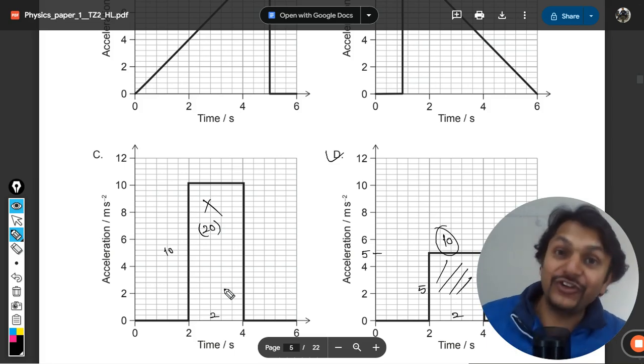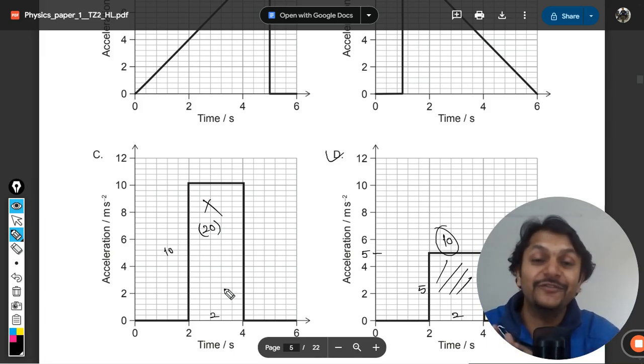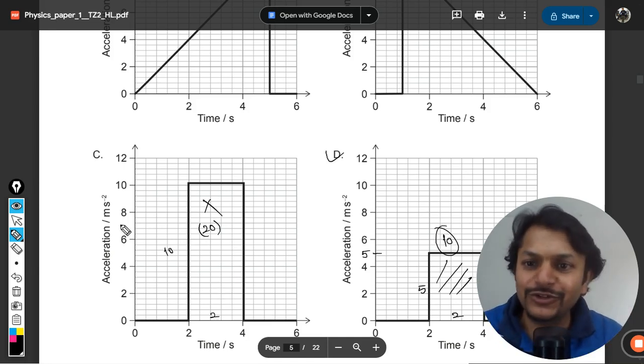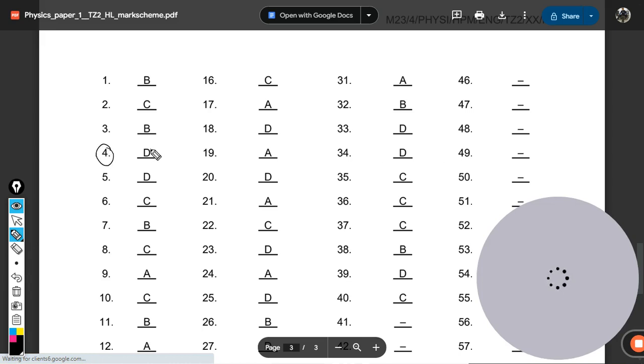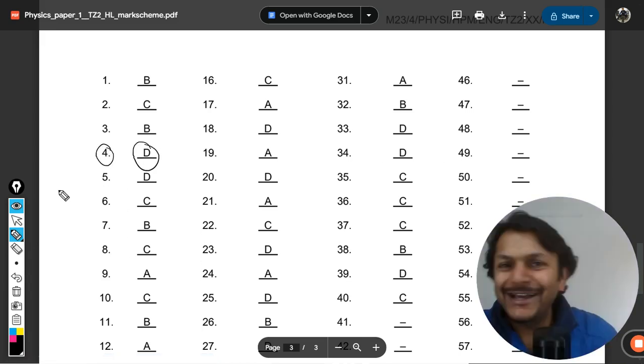And this is how we are going to do it. Very tricky question I would say. IB has created a very beautiful question, no doubt about that. So this is how we do this question. Let's verify it from the mark scheme. If the answer is D, this is question number 4, and yes, the answer is D. This is how we do this.